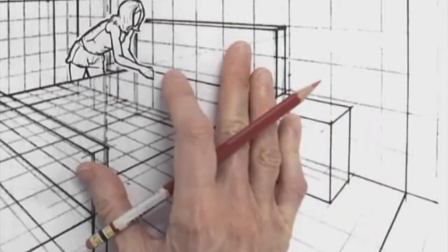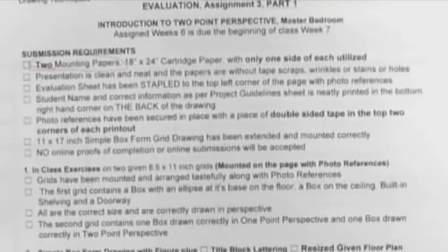This time we're using two mounting papers. One mounting paper is going to have your references and your two in-class sketches. The other mounting paper is going to have just your box drawing with your title block at the bottom.